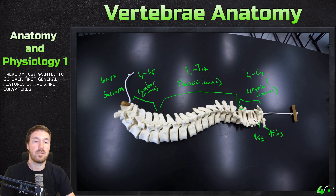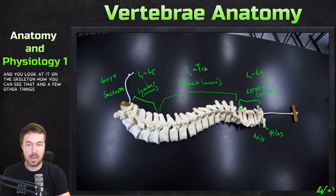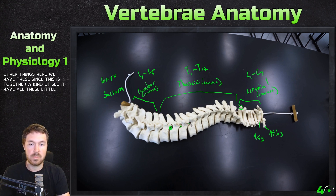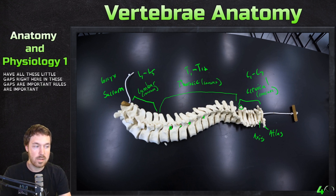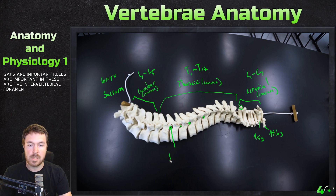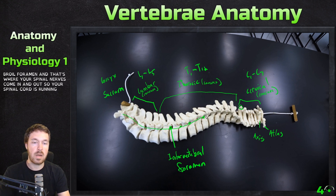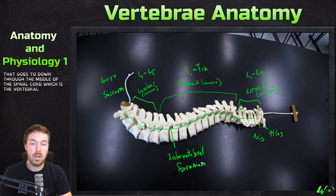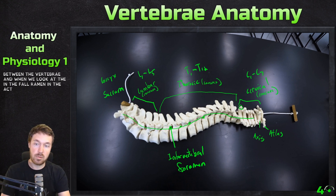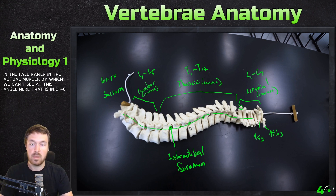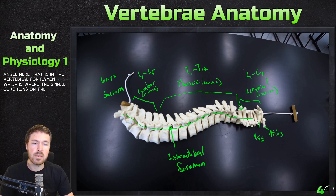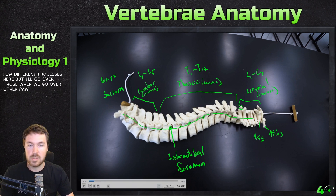So we have these different curvatures. We also have these gaps between vertebrae — these are important. These are the intervertebral foramen, and that's where your spinal nerves come in and out. Your spinal cord is running through the foramen that goes down through the middle, which is the vertebral foramen. So the intervertebral foramen is the one between the vertebrae, and the vertebral foramen in the actual vertebrae is where the spinal cord runs. There are also a few different processes, but we'll go over those when we look at other parts of the models.